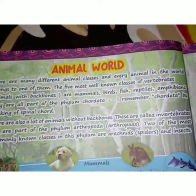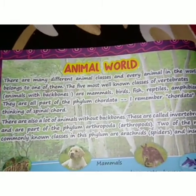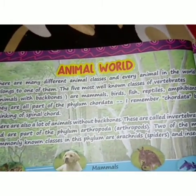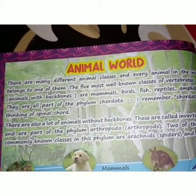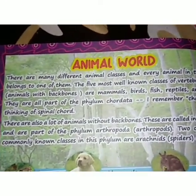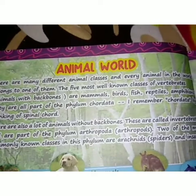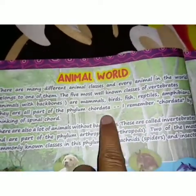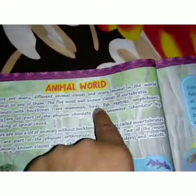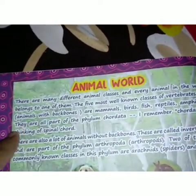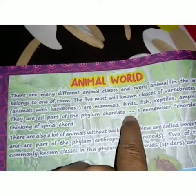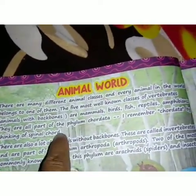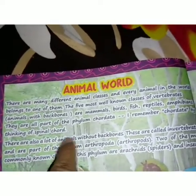The five most well-known classes of vertebrates — vertebrates means those animals which have a spinal cord or backbone — are mammals, birds, fish, reptiles, and amphibians. They are all part of phylum Chordata, which means spinal cord.